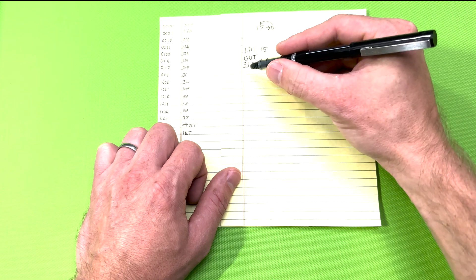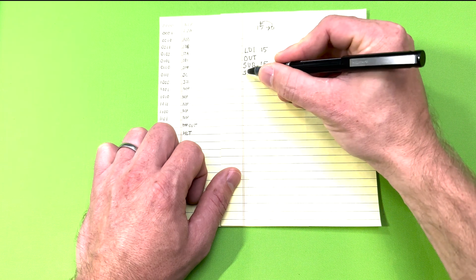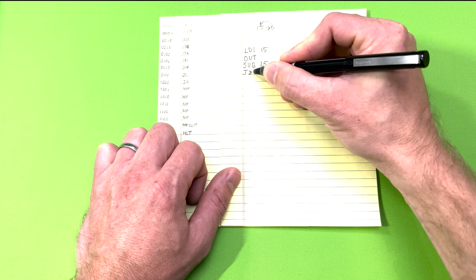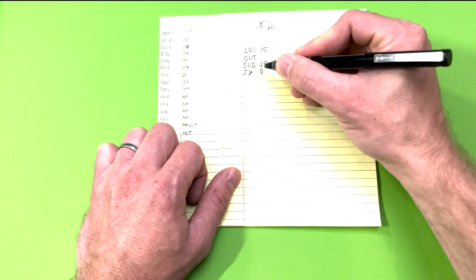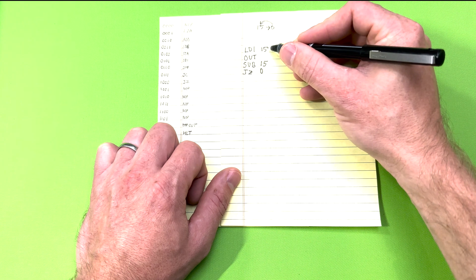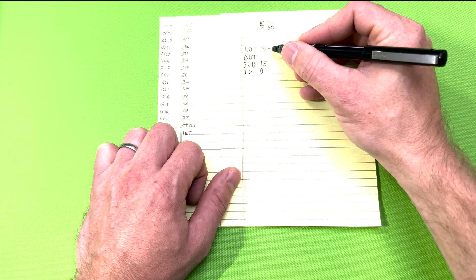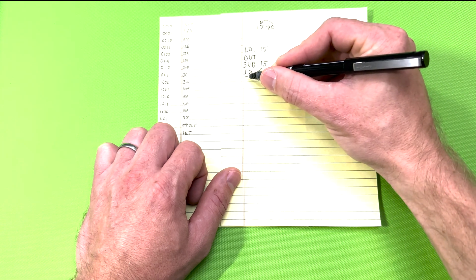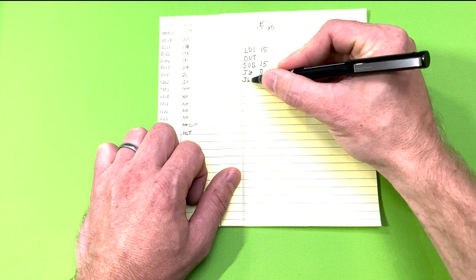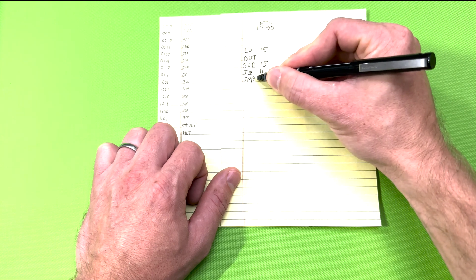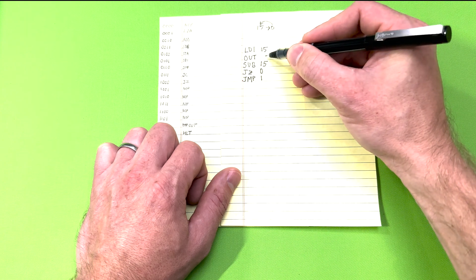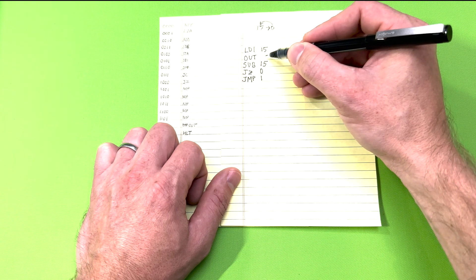The next instruction will check to see if the SUM is zero and jump back to instruction 0 if it is in fact zero. If it's not zero, the program will continue to the next instruction so the next instruction will just jump back to instruction 1 which will output the value of the subtracted value stored in register A and repeat the program again.